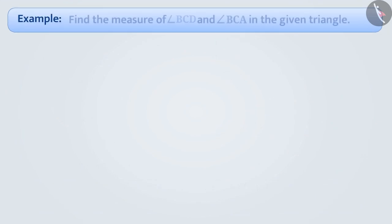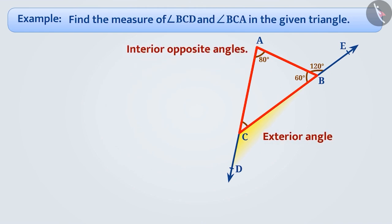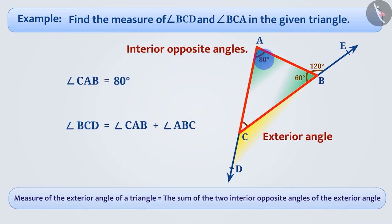Next example: find the measure of angle BCD and angle BCA in the given triangle. Angle BCD is the exterior angle of triangle ABC, and angle CAB and angle ABC are the two interior opposite angles of angle BCD. The measure of the exterior angle of a triangle is equal to the sum of its interior opposite angles. Therefore, angle BCD is equal to angle CAB plus angle ABC. Since angle CAB is equal to 80 degrees and angle ABC is equal to 60 degrees, angle BCD is equal to 80 degrees plus 60 degrees, which is equal to 140 degrees.